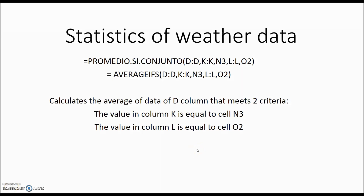Today we will be discussing how to calculate some statistics of daily weather data. We will use the formula PROMEDIO.SI.CONJUNTO in Spanish, or AVERAGEIFS in English. In parenthesis we have: first, the range of data we want to calculate an average for, then a first condition, a second condition, and we could add more conditions.